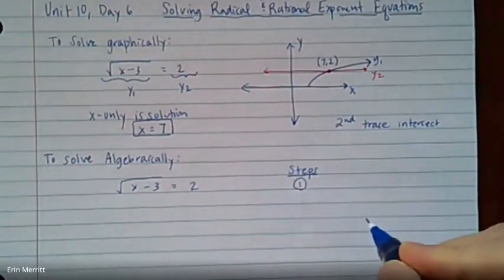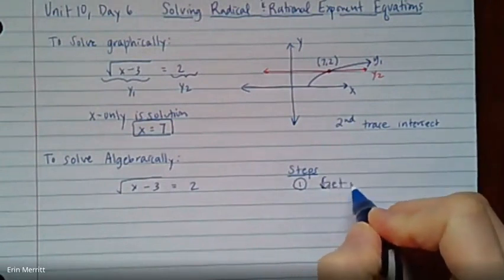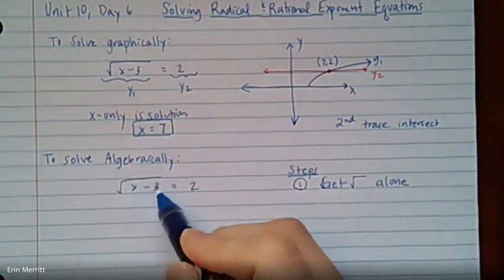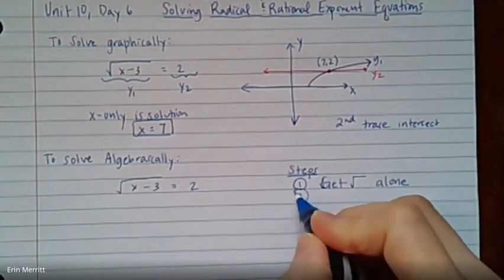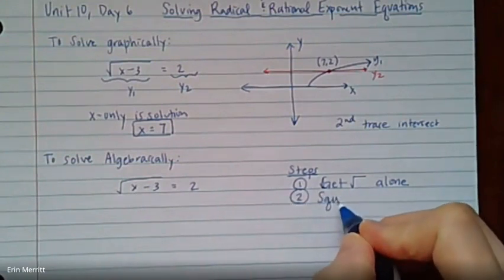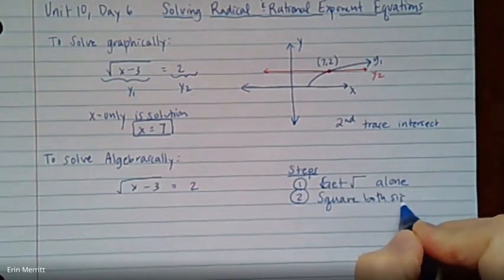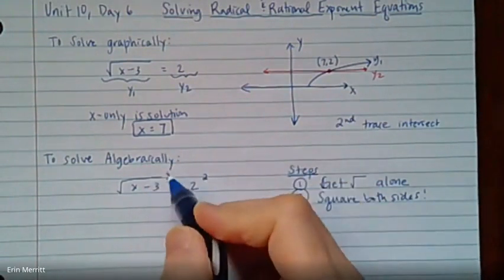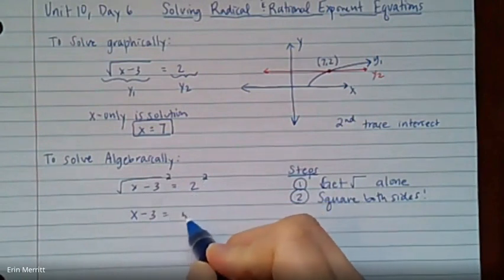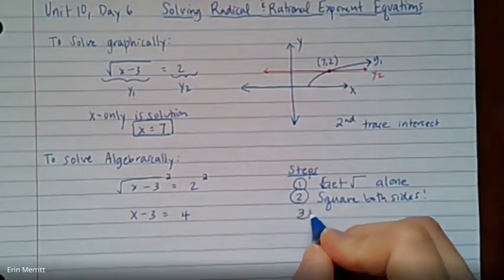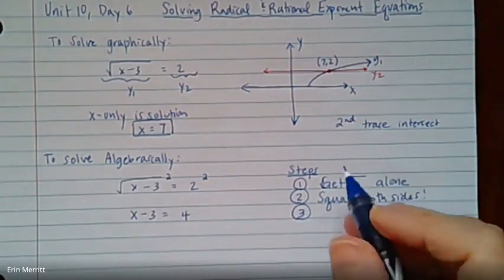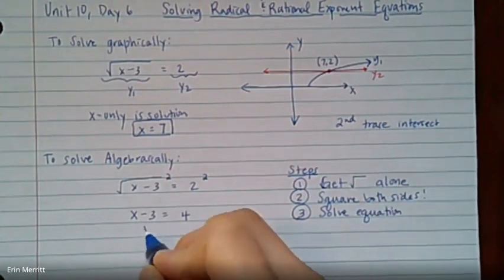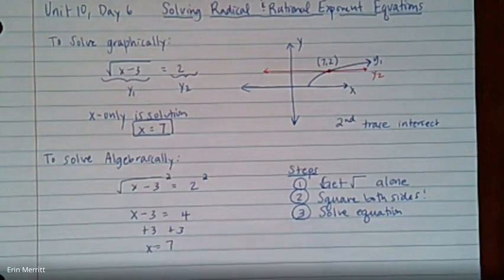Our first step would be to get rid of the radical. We don't want to deal with the radical here. Step one, we're going to get the radical alone first, if it's not. In this case, the radical's all by itself on the left-hand side. Then we're going to square both sides to completely eliminate the radical. So if we square the left, square the right, the radical cancels. We get x minus 3 over here. This would give us 4 on this side.